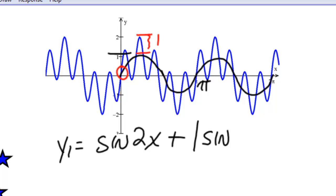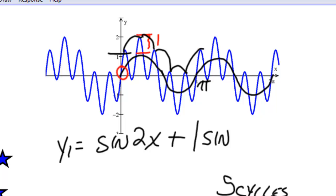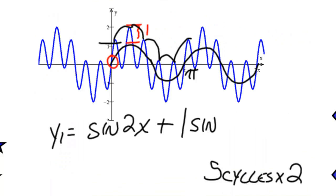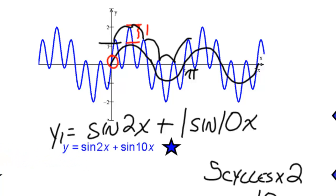The number of cycles we see within one cycle of the sinusoidal axis is 5. We see 5 cycles within an already compressed sine function. So we take the 5 cycles times the dilation factor of 2 from the original, giving a coefficient of 10 for our second function. So our expression of this image as the sum of two sinusoids is sin(2x) + sin(10x).